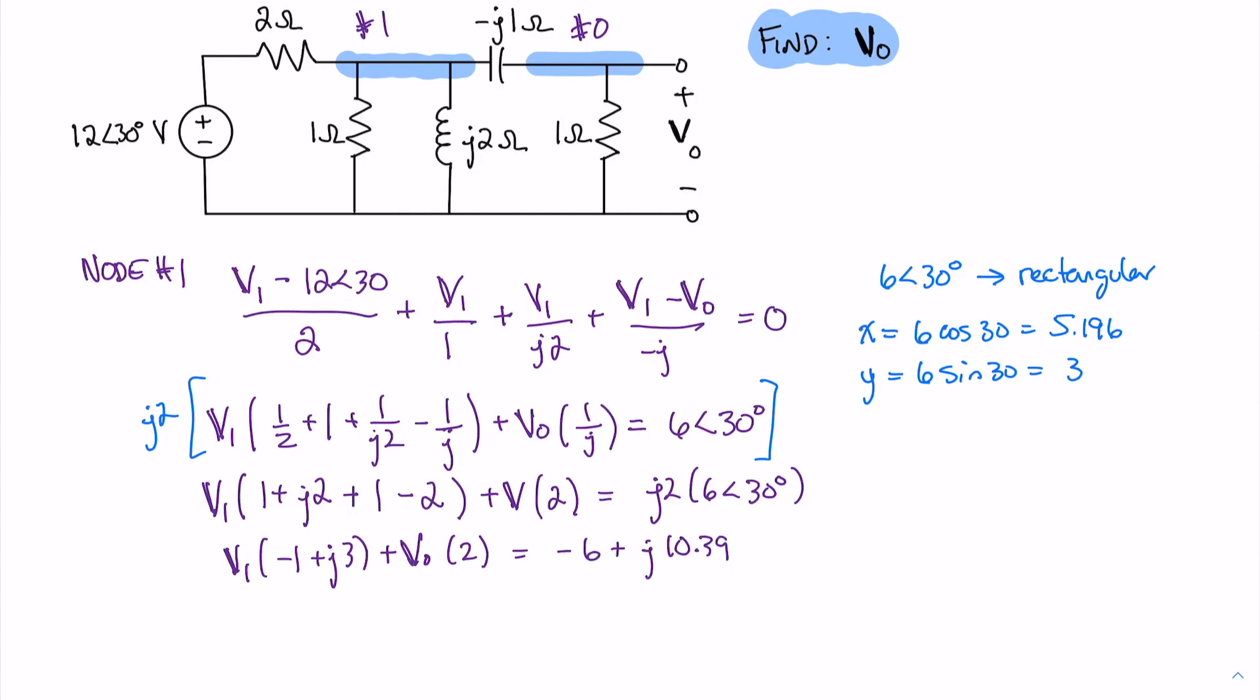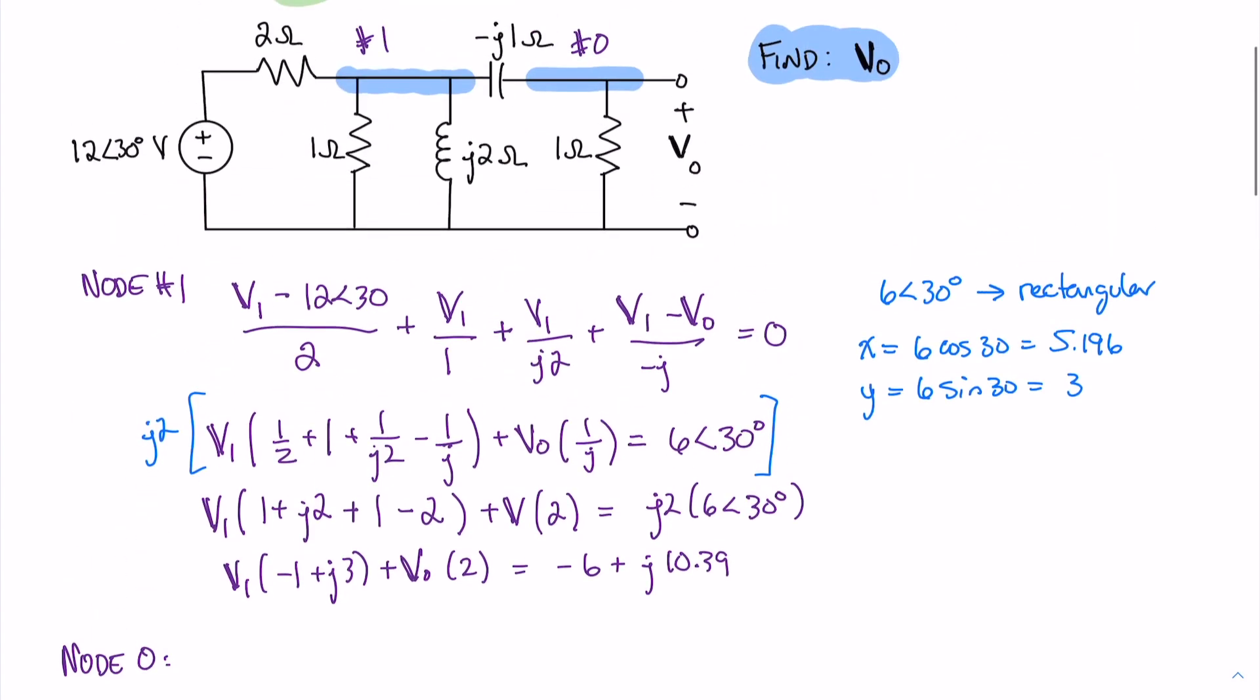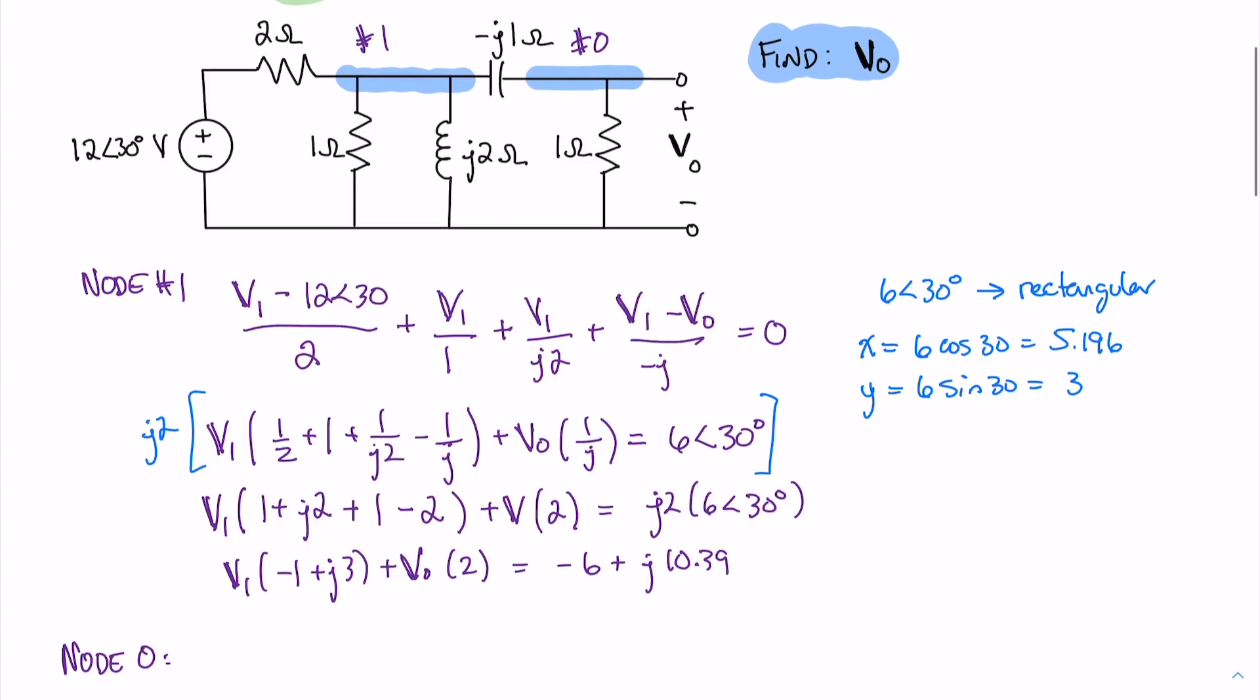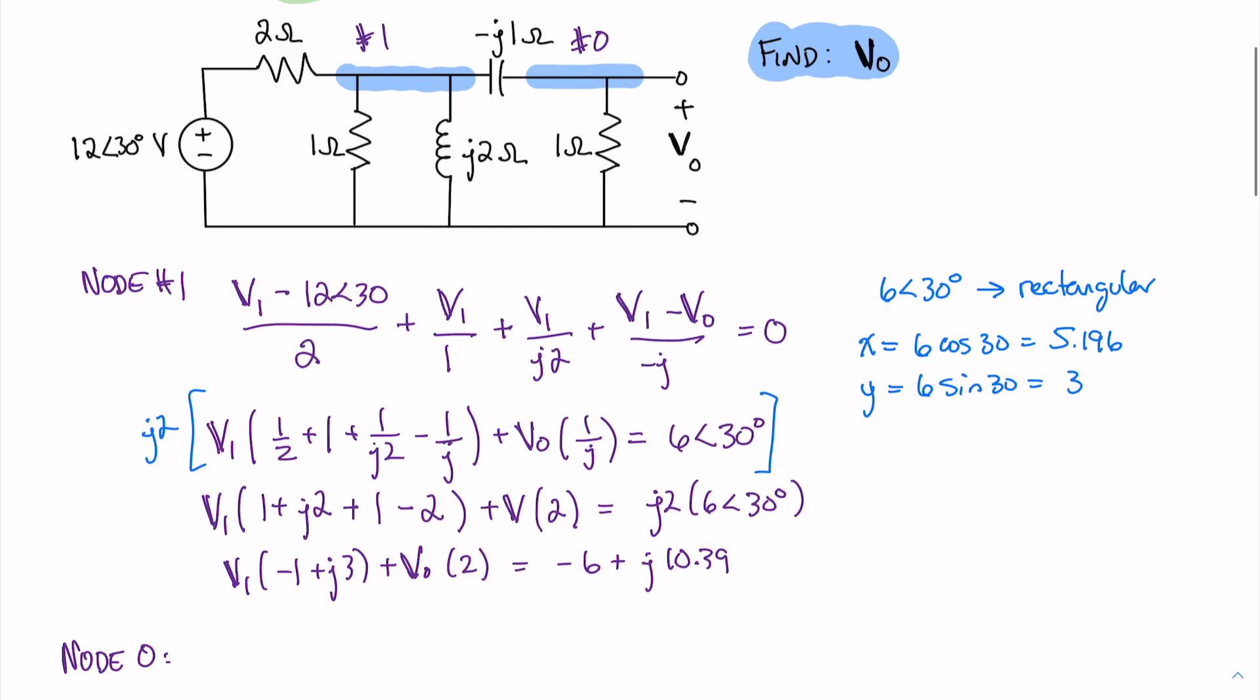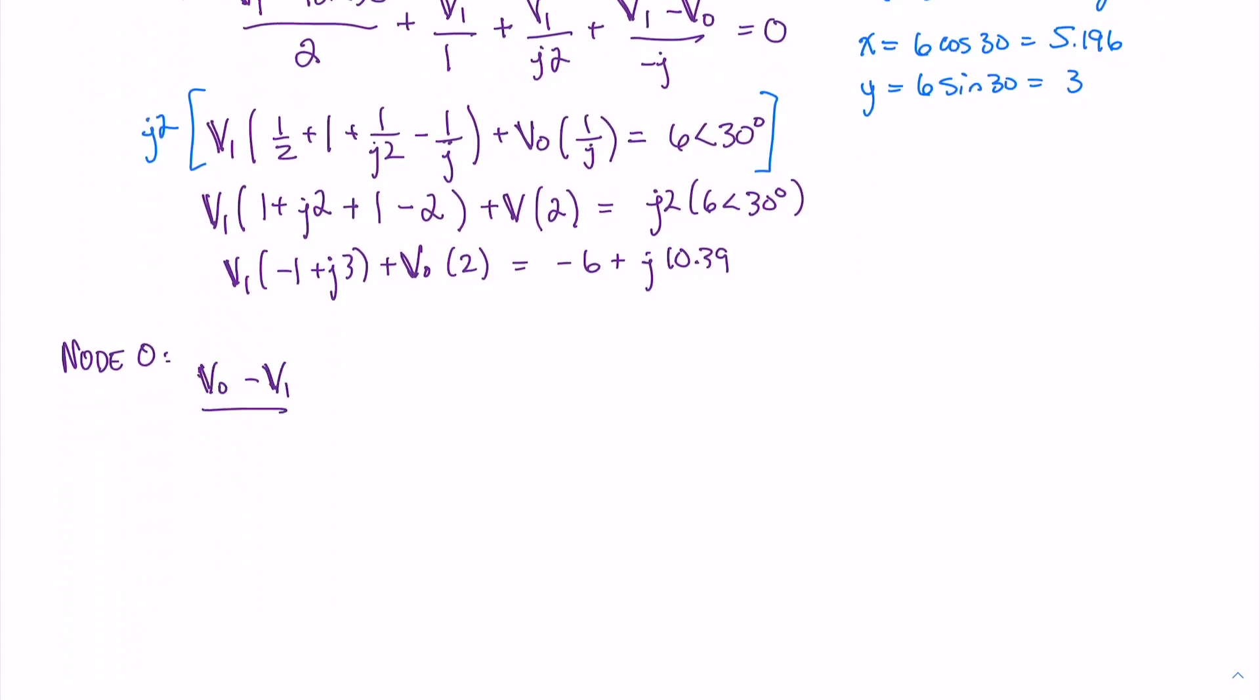Now let's find a second equation at node 0. For this, we'll have V0 minus V1 divided by minus J1 ohm and V0 divided by 1 ohm equals 0.